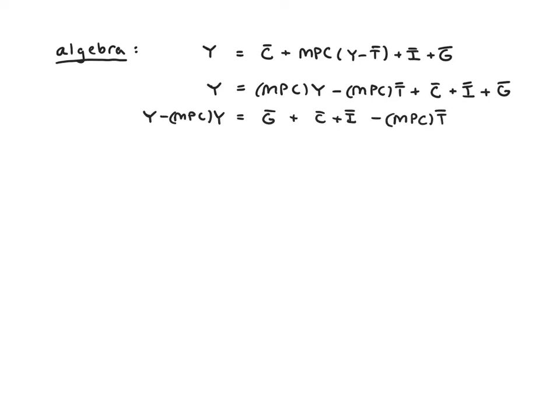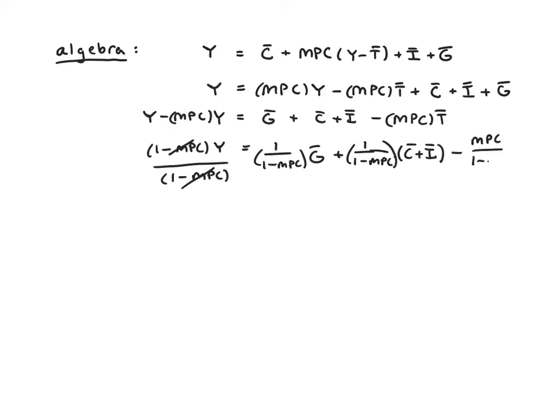The left-hand side, we'd like to simplify that down to just Y. We'll get 1 minus MPC times Y, and then we'll divide both sides by 1 minus MPC. The 1 minus MPC canceled, but then we'll have to divide the right-hand side by 1 minus MPC. So we end up getting 1 over 1 minus MPC times G bar plus that same coefficient, 1 over 1 minus MPC times C bar plus I bar minus MPC over 1 minus MPC times T bar.